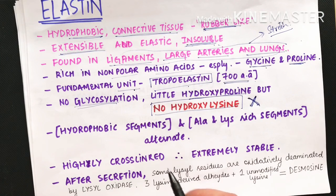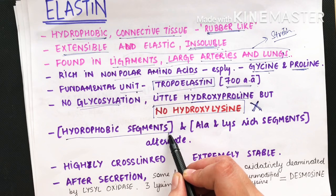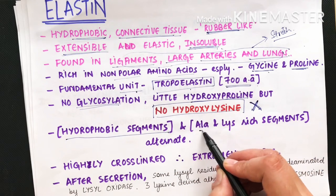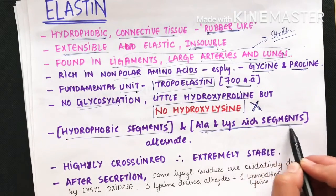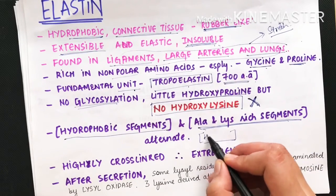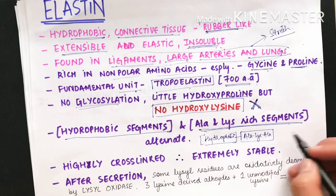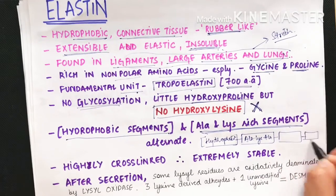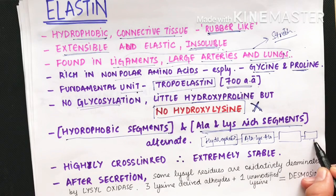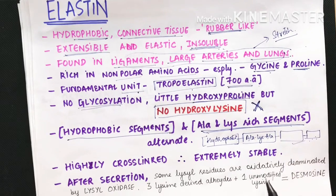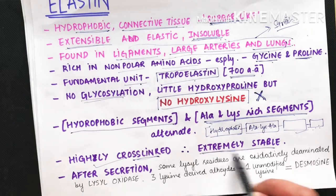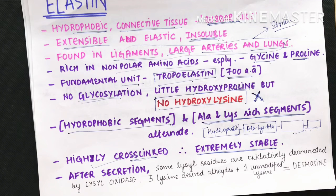The fundamental unit of elastin is tropoelastin, around 700 amino acids long. Unlike collagen, elastin has no glycosylation and very little hydroxyproline, and no hydroxylysine. Two alternating segment types are seen: a hydrophobic segment containing hydrophobic amino acids, and an alanine- and lysine-rich segment. These alternate and repeat throughout the elastin polypeptide chain, which is highly cross-linked and extremely stable.